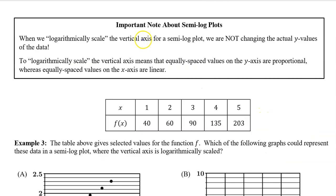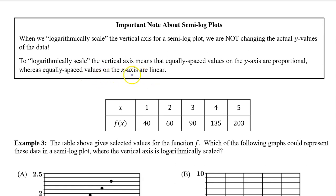Here's an important note about semi-log plots. When we logarithmically scale the vertical axis, we are not actually changing the y values of the data. To logarithmically scale the vertical axis means that equally spaced values on the y-axis are proportional, whereas equally spaced values on the x-axis are linear. That's why we call it semi-log plots — because we are only logarithmically scaling the vertical axis, not the horizontal axis.